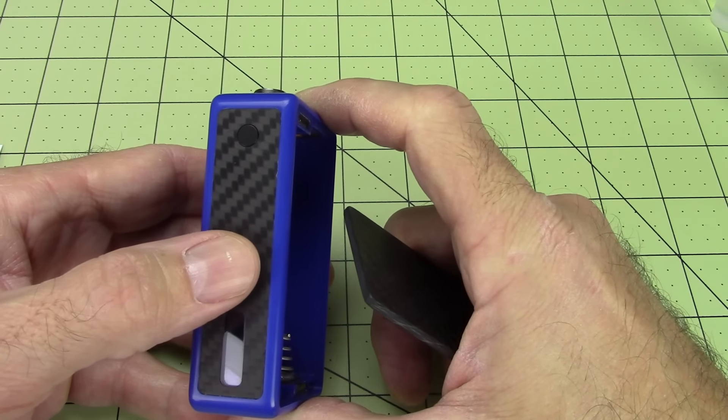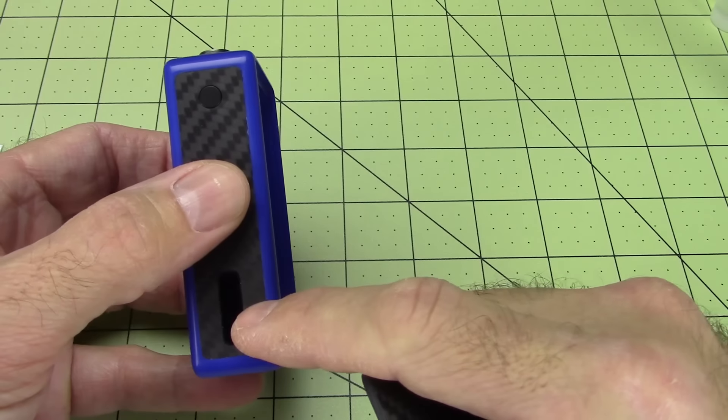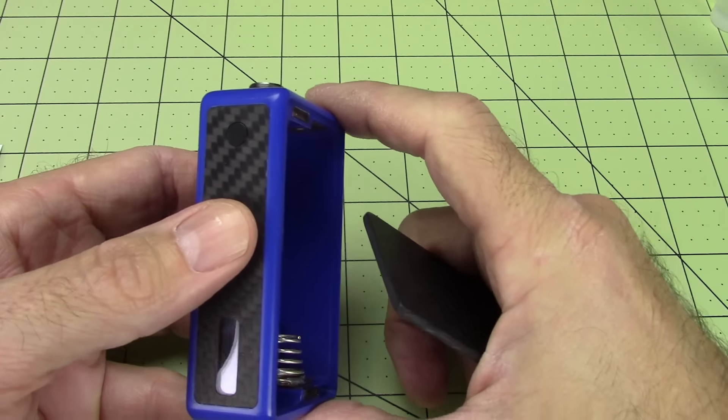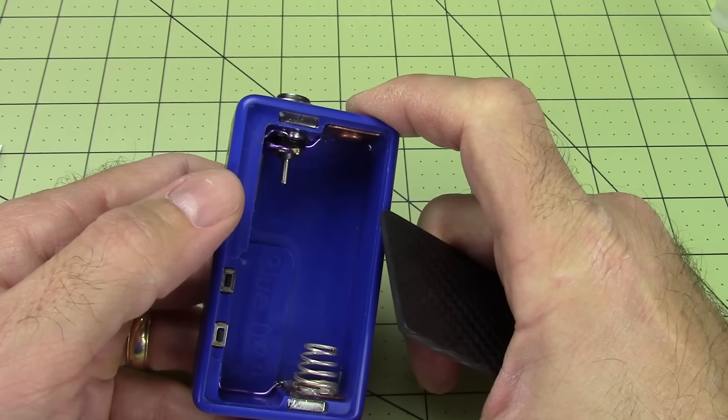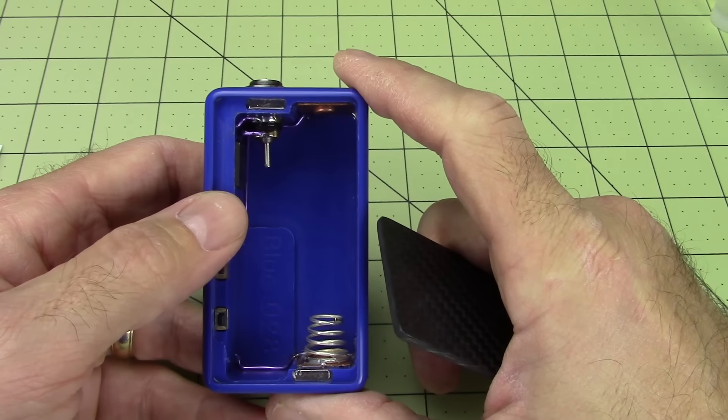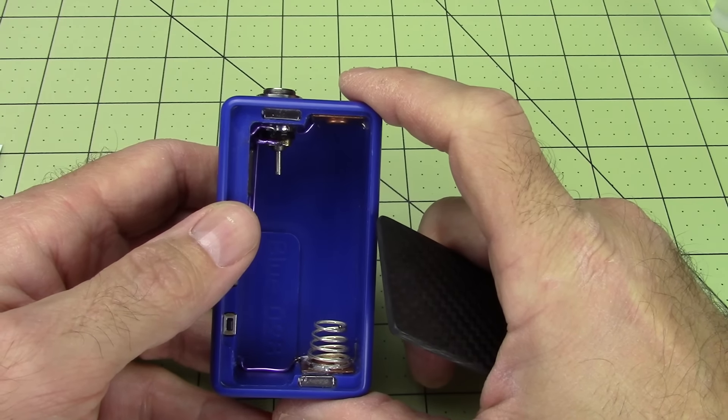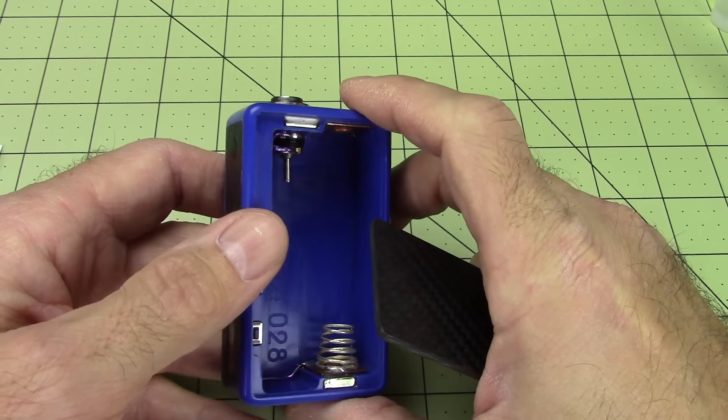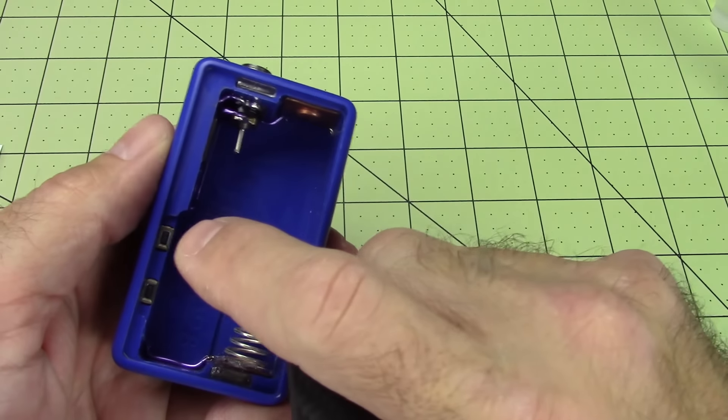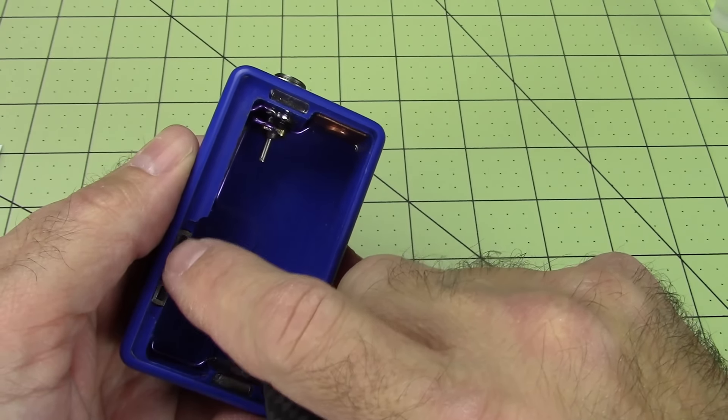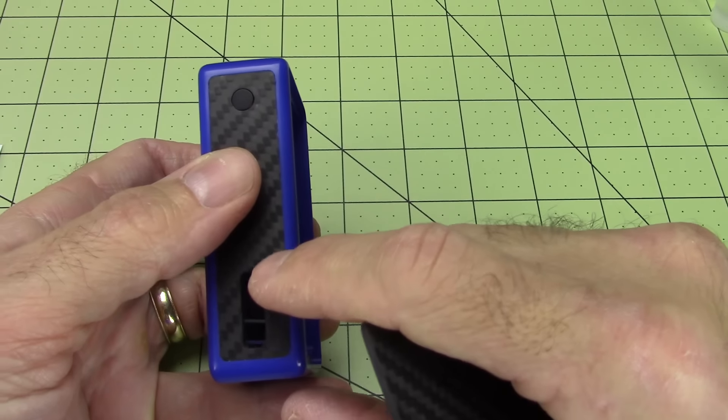This is a DNA40 chip, small screen, with temp control, 40 watts, reverse polarity protection, and all the features of a DNA40 screen. The fire button is here. The controls location are here. And the display and readout is here.